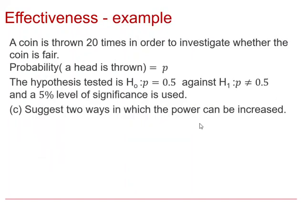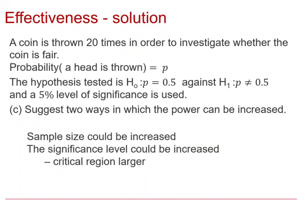So we're now asked to consider two ways in which the power can be increased, and generally that will either be by increasing the sample size, so throwing the coin more than 20 times, or we could look at increasing the significance level for the test.